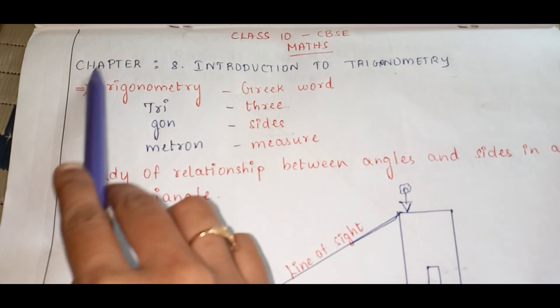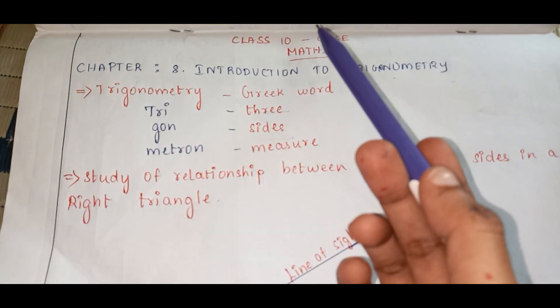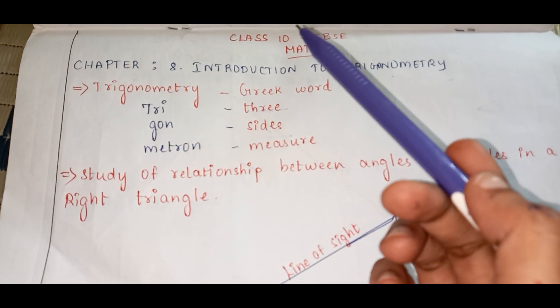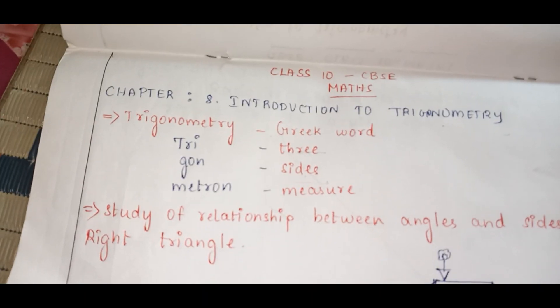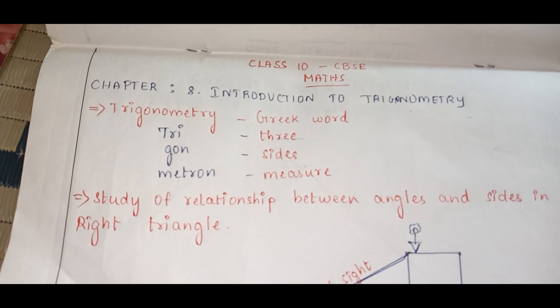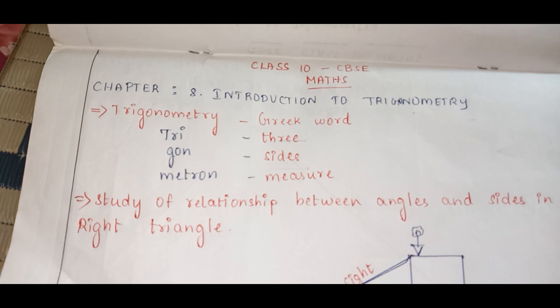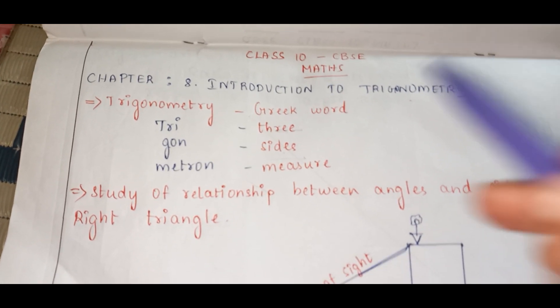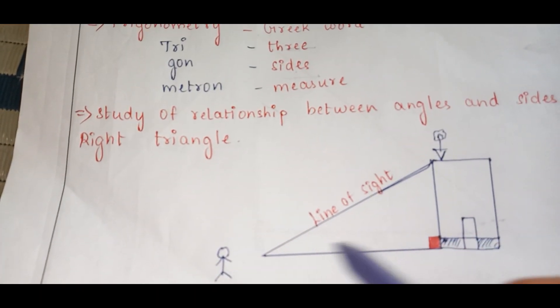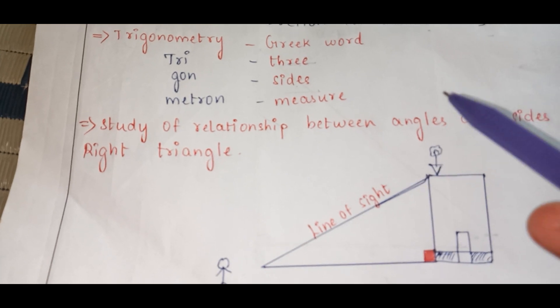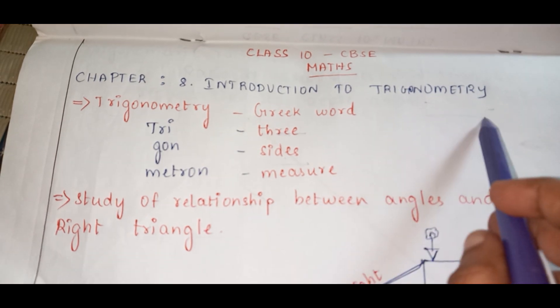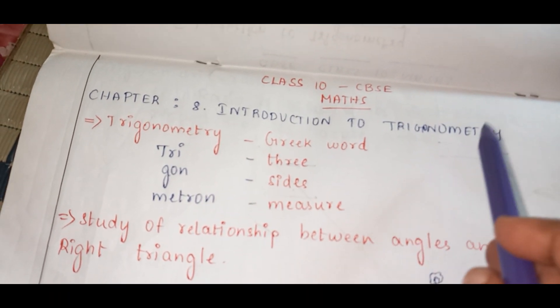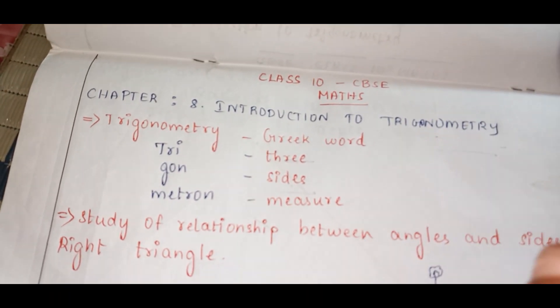So what does this word mean? Measurement of three sides. When I say three sides, which particular shape comes to your mind? Triangle, because triangle is the only shape which consists of three sides. So this topic, Trigonometry, is purely based upon the shape triangle.